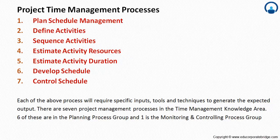You need to be very particular on this because there are close to 45 to 46 processes in total, and out of those, 20 are contributed by only integration management, scope management, and project time management combined. There are rest of seven knowledge areas as well, so these are very important knowledge areas of project management. Each of the above processes will require specific inputs, tools and techniques, and outputs to generate the expected output, as defined for scope and integration.